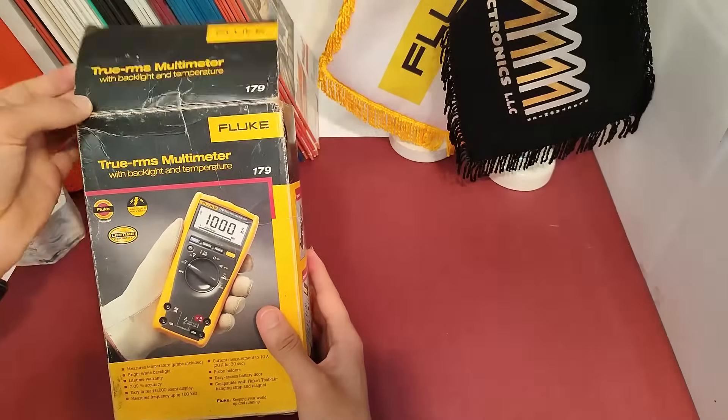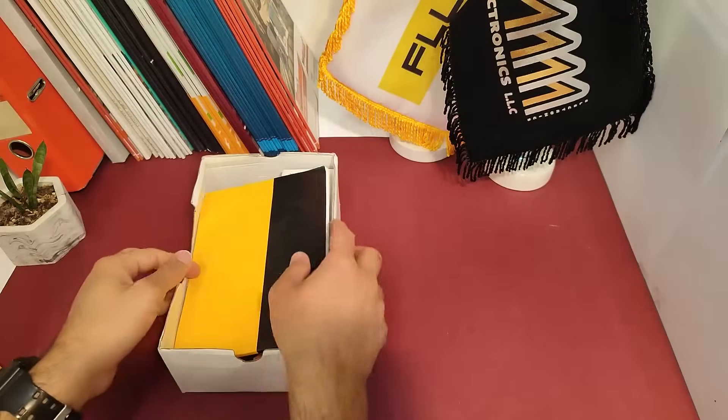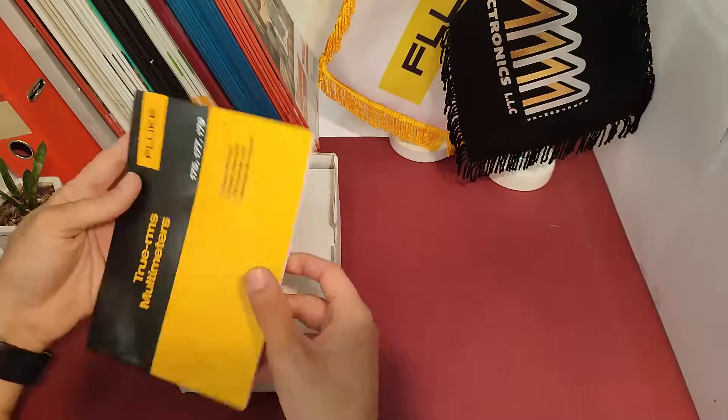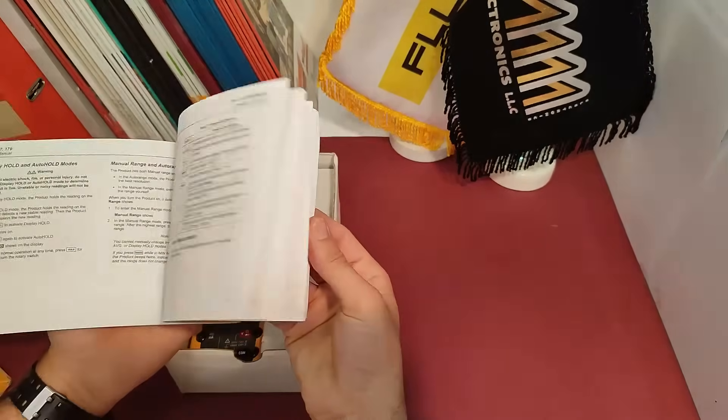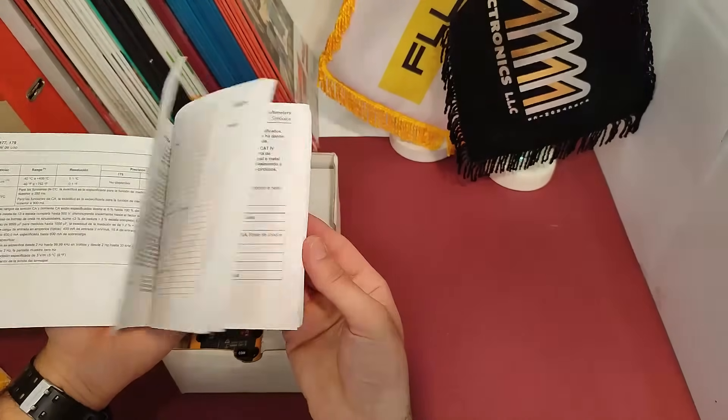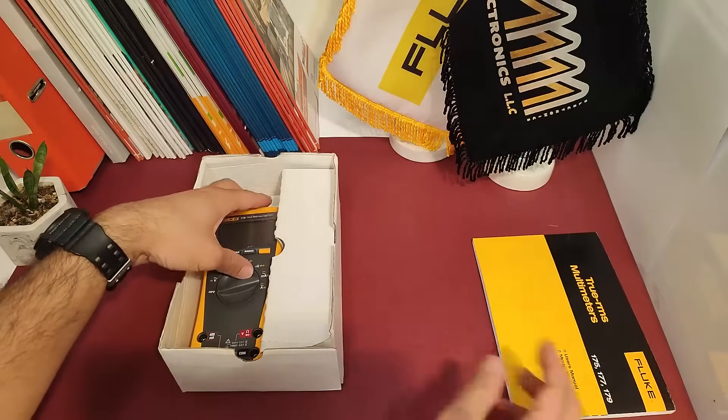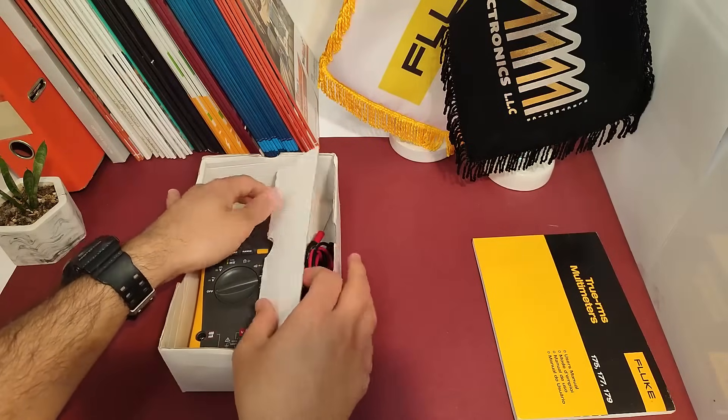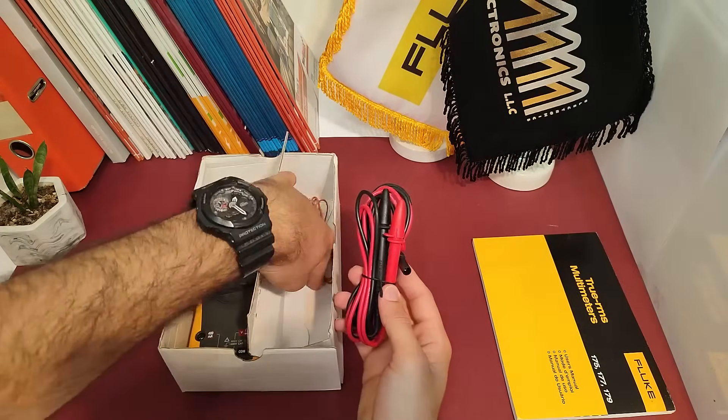The FLOG 179 multimeter comes with a variety of accessories that are included in the box. The user manual is very detailed with clear instructions on how to use the multimeter. It's an essential for anyone who wants to use the FLOG 179 multimeter to its full potential.